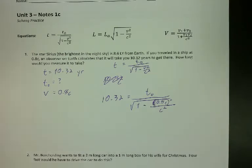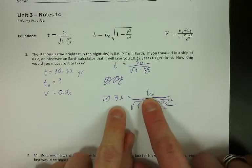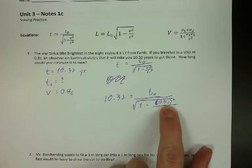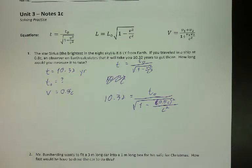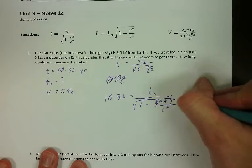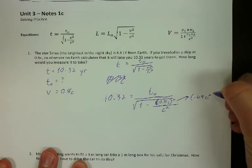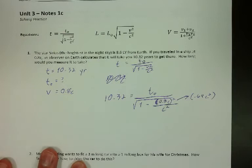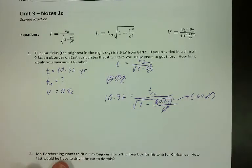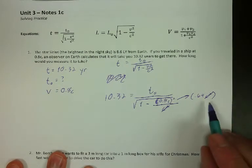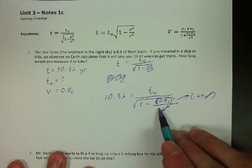The number one mistake people make is getting T and T-not mixed up. The second big mistake is with squaring this part. You need to actually square both 0.8 and C — you can't square just one. Also notice I'm not plugging in a numerical value for the speed of light, and I'll show you why in a second. When you square 0.8C, you get 0.64C². You have to square them both.